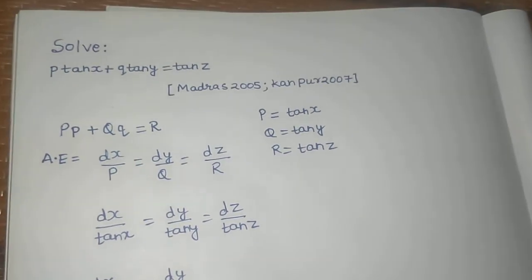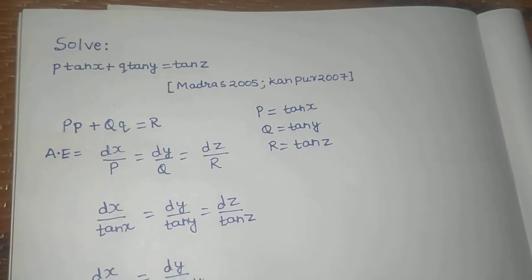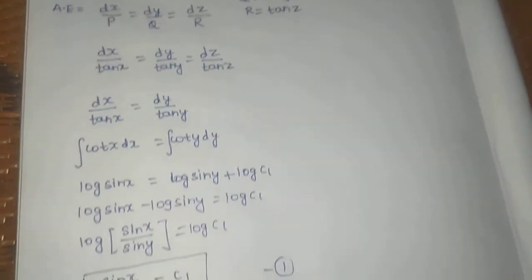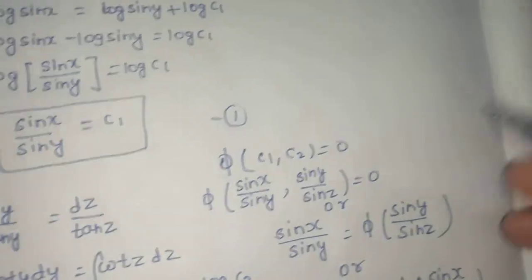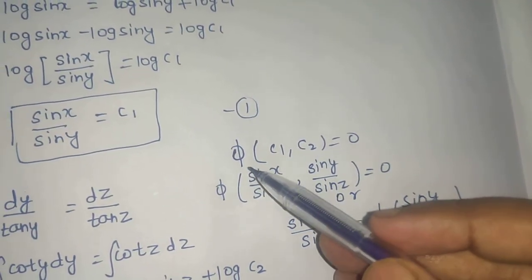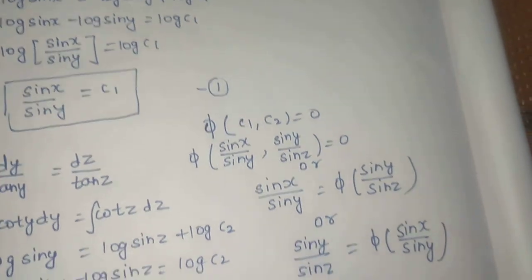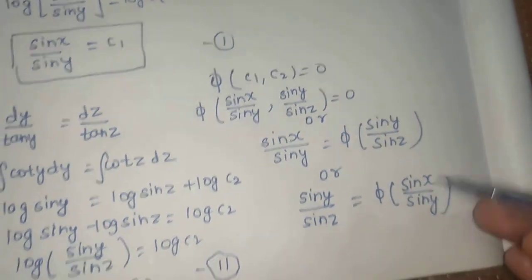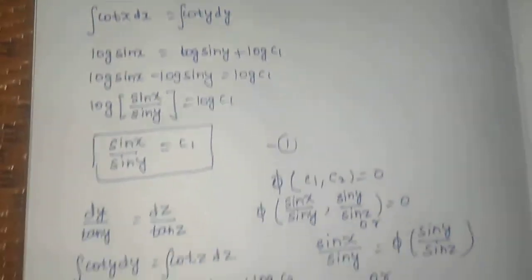I hope you understood the question. First, find what is P, Q, and R. Then come to the auxiliary equation. You will get three different things. Equate them, solve them, and find the values of c1 and c2. The final general solution is phi of c1 comma c2 equals to 0, where phi is any function. You can write the final answer in any of these three ways. Thanks and have a very nice day.